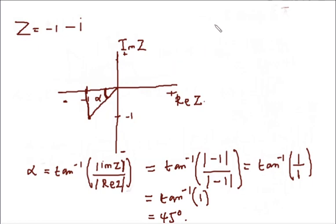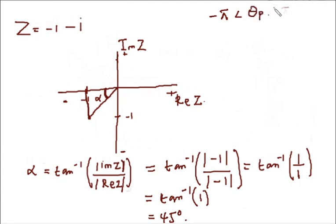The next step is to find the principal argument. For every complex number, the principal argument must satisfy this condition: minus pi has to be less than the principal argument, and the principal argument has to be less than or equal to pi. In terms of degrees, this is minus 180 degrees to 180 degrees.